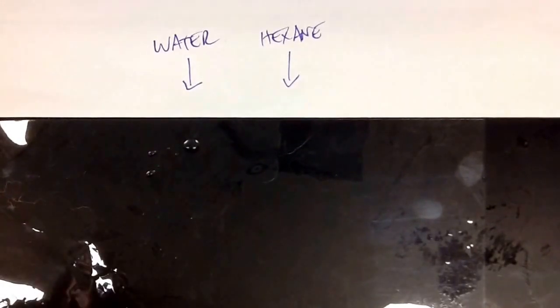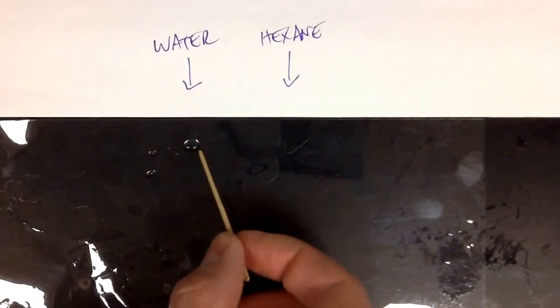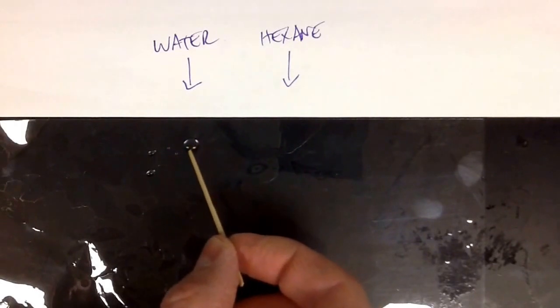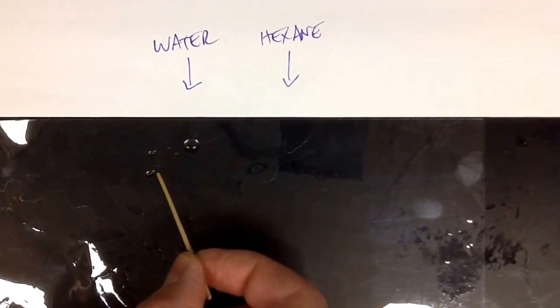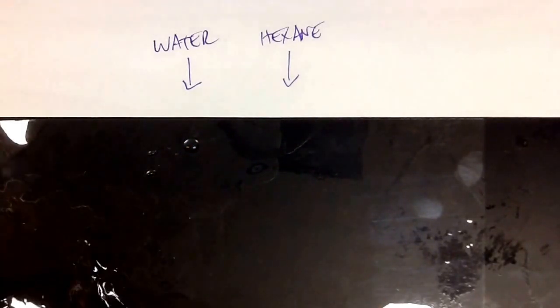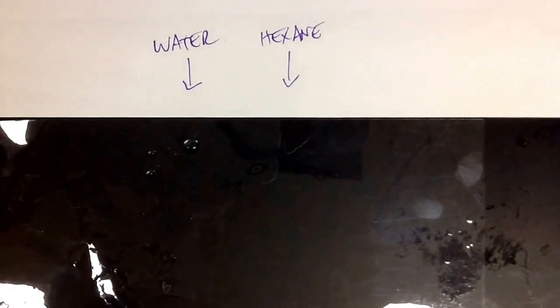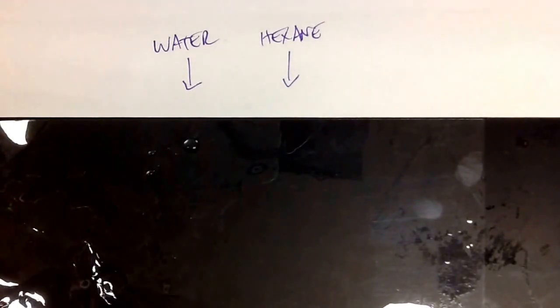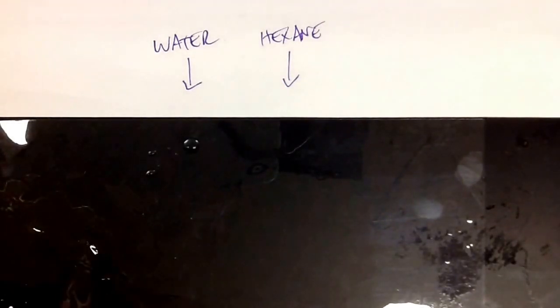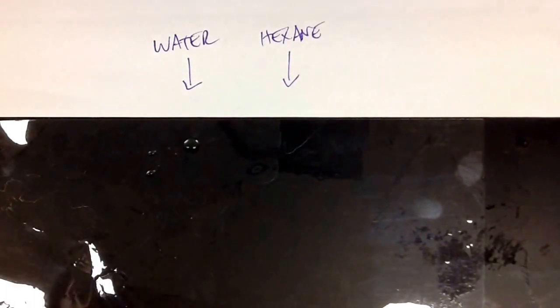But, you'll notice that the water molecules, a lot of them, they want to stay in this group. And then, the ones I was able to pull away, they sort of stay together. So, thinking about the strength of those intermolecular bonds, you're going to notice that the water molecules really want to stay together. Those intermolecular bonds, the bonds between the molecules, must be really strong.